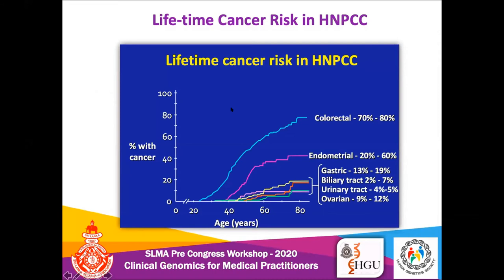What is the lifetime risk of developing cancers in individuals with mutations in the mismatch repair genes in HNPCC? The top risk is colorectal cancer at 70 to 80 percent. Endometrial cancer is next at 20 to 60 percent. There are also risks for gastric, hepatobiliary, urinary tract, ovarian, and other cancers. The lifetime risk of any of these cancers is significantly increased in these individuals.